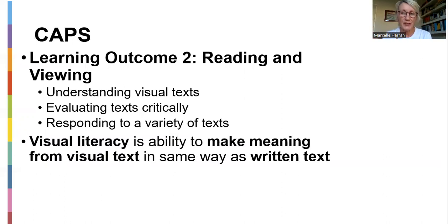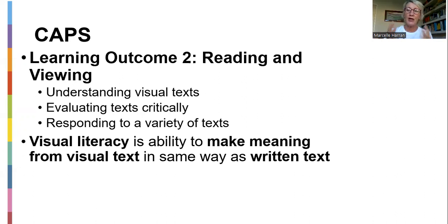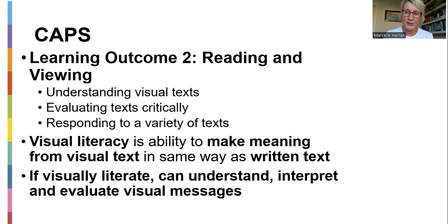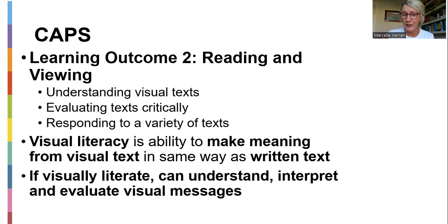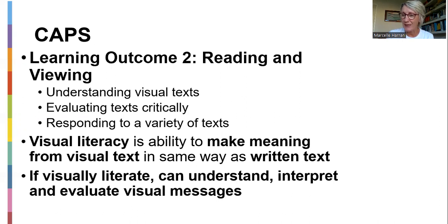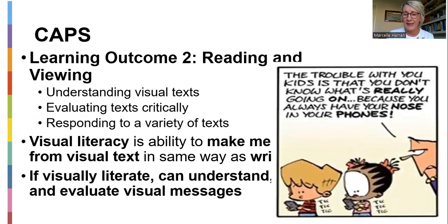Visual literacy is making meaning of a visual text in the same way you make meaning of a written text. When you see a picture you must be able to interpret and unpack it. Some people can't see facial expressions or read the detail of a picture, so you have to study pictures to become visually literate — to understand what you've seen, interpret what the photographer or illustrator wants to show, and evaluate the visual message.